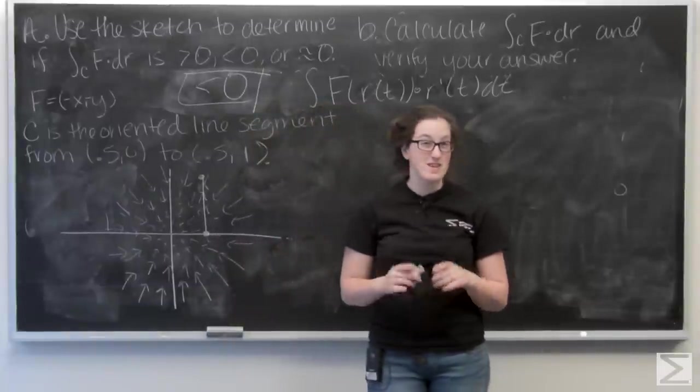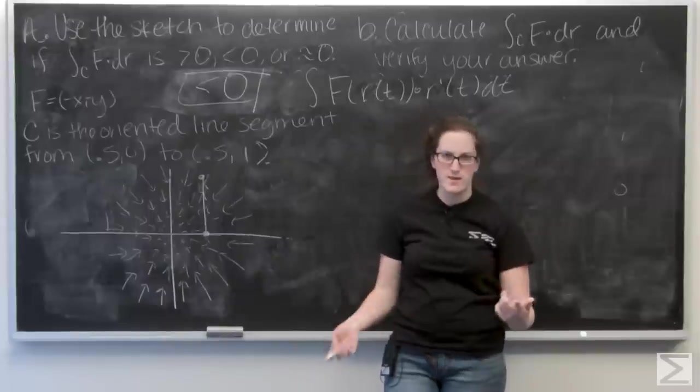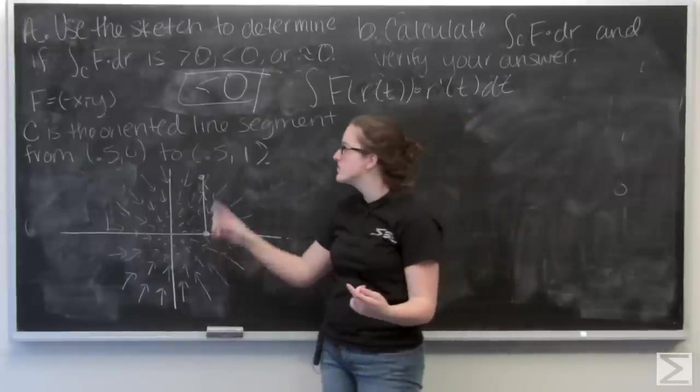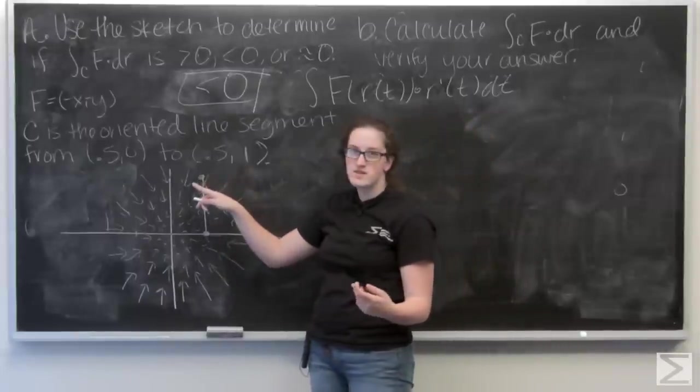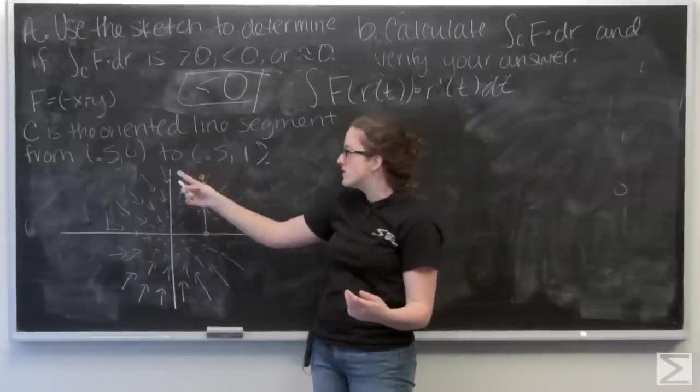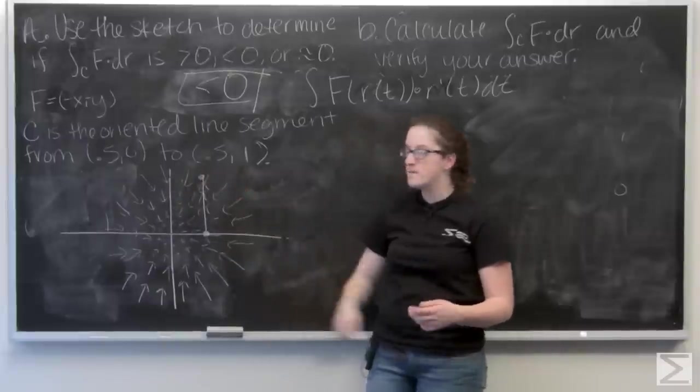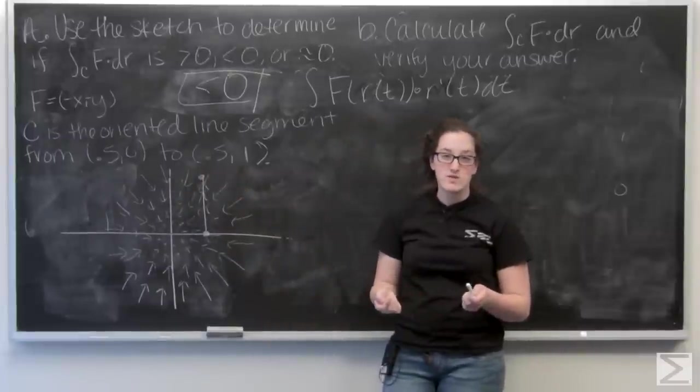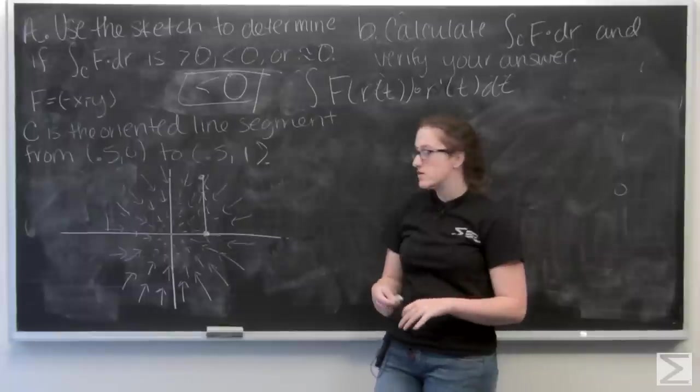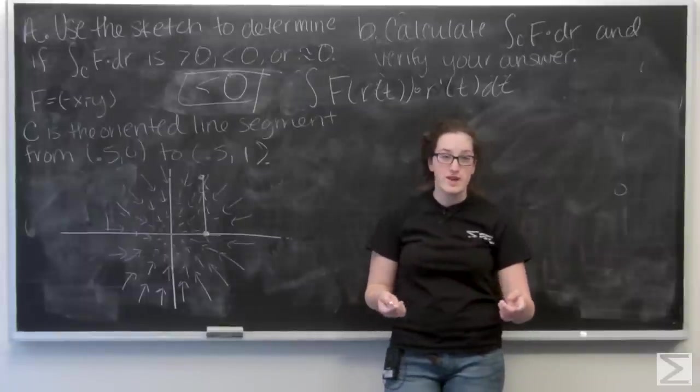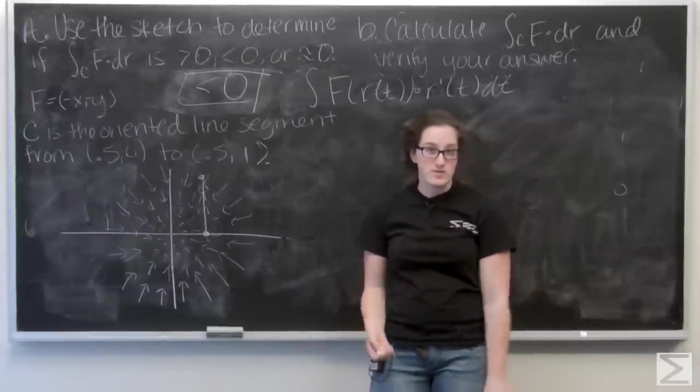And you probably noticed that I wasn't given one, but I can find one pretty easily. So let's think about these two points that make up C. I have (0.5, 0) to (0.5, 1). Well the x component of those points stays the same. So I'm going to say for a parametrization of that, the i component would just be 0.5.